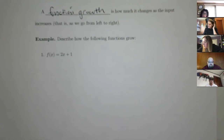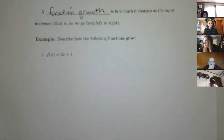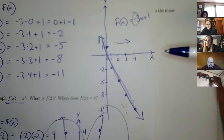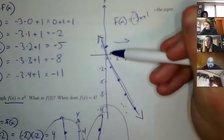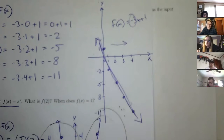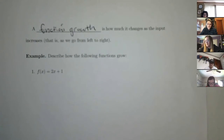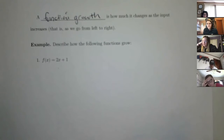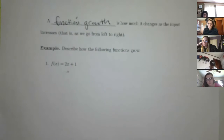A function's growth is how much it changes as the input increases. When we talk about a function increasing or decreasing, we're talking about it increasing or decreasing as you move from left to right — the same way you read. So in this example we did yesterday, this function decreases as you go from left to right because the y values are decreasing. As x increases, how does this function grow?